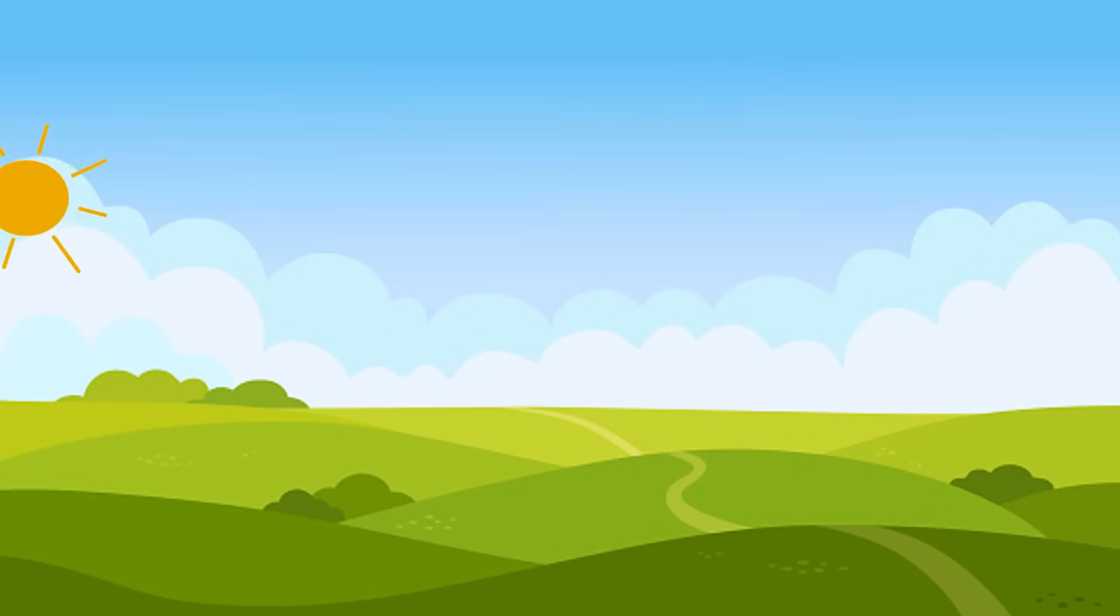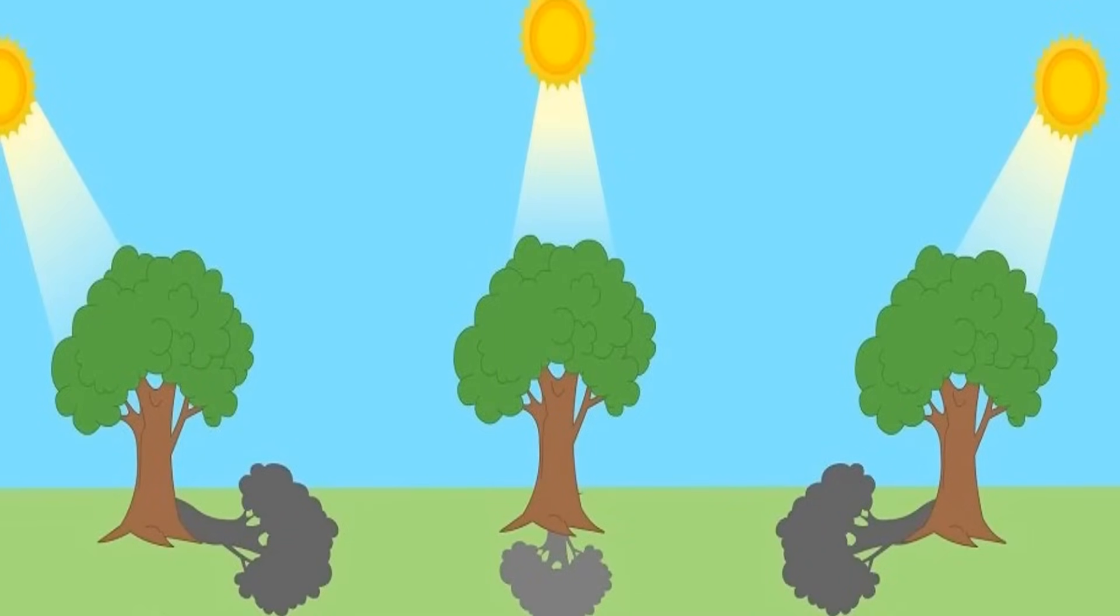When we go outside, the length and position of our shadow in sunlight is different at different times of the day. The sun appears to move across the sky from morning to evening. Accordingly, the shape and the length of the shadows change as well.